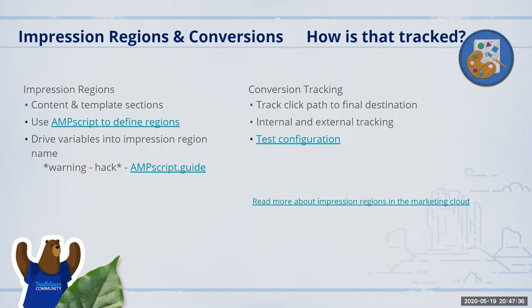Again, driving variables into impression regions dynamically is a hack — it's not supported by Salesforce Marketing Cloud. If you call support and they see dynamic impression regions not done with the dynamic content blocks in Content Builder, they will ask you to use the supported approach instead. You can define an impression region using dynamic content blocks in Content Builder as well. But impression regions are very helpful — you can track entire sections of your template to see how subscribers are engaging with them.